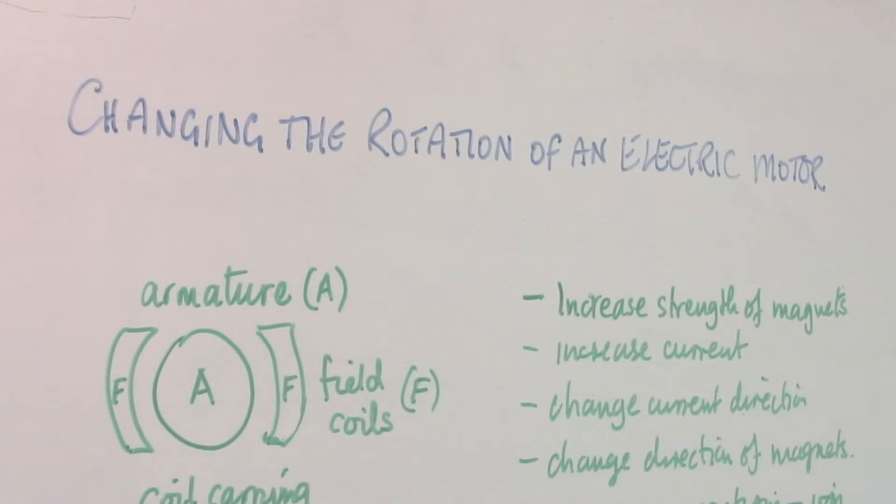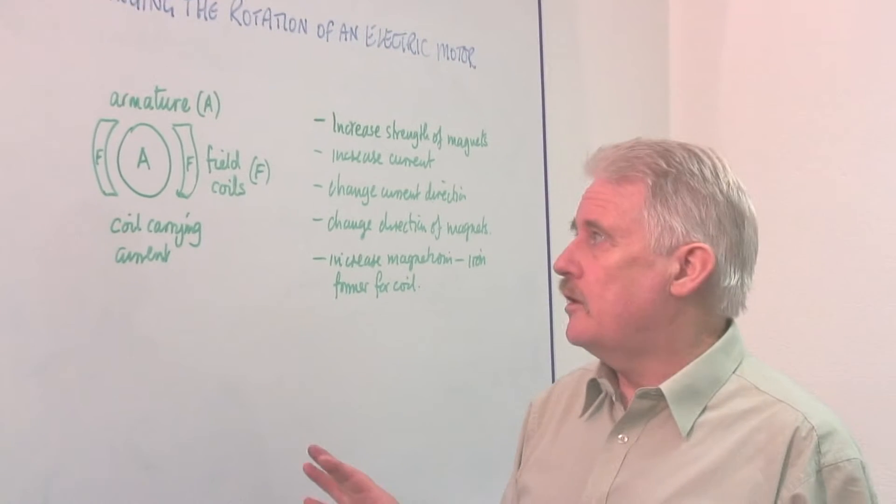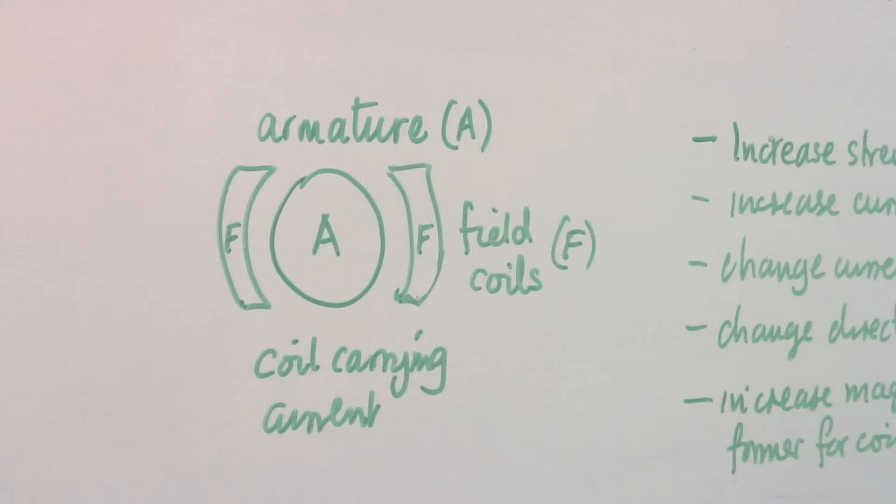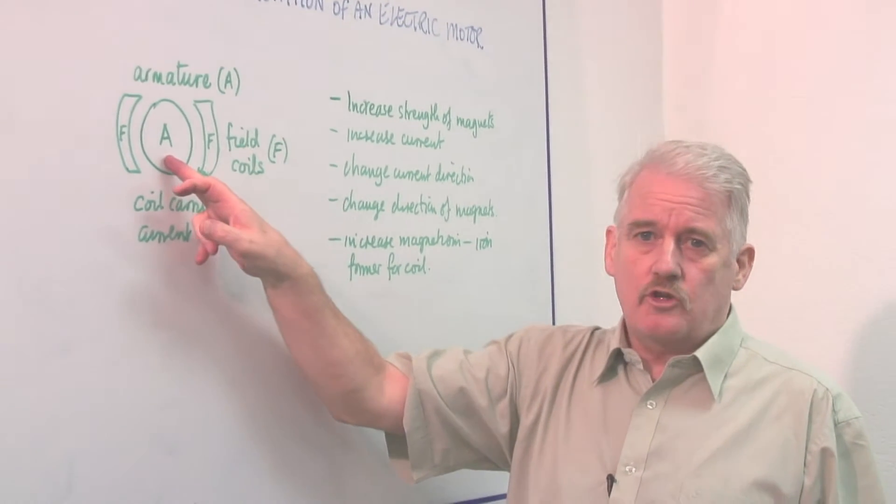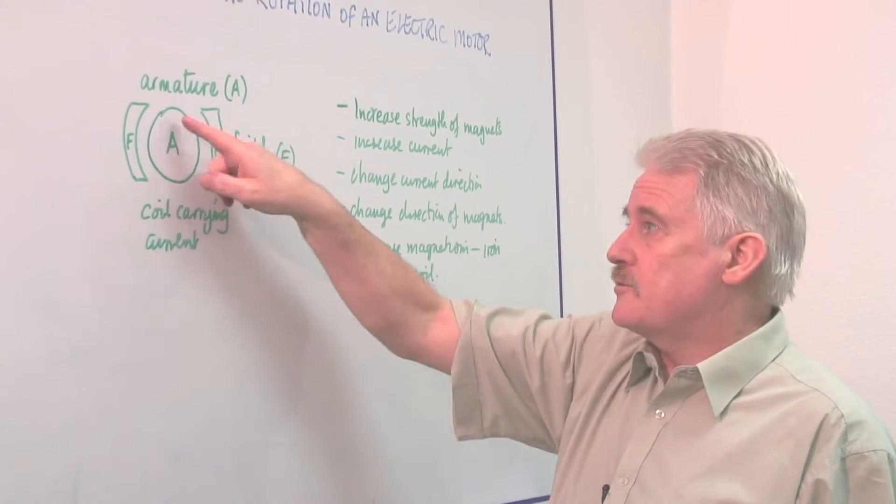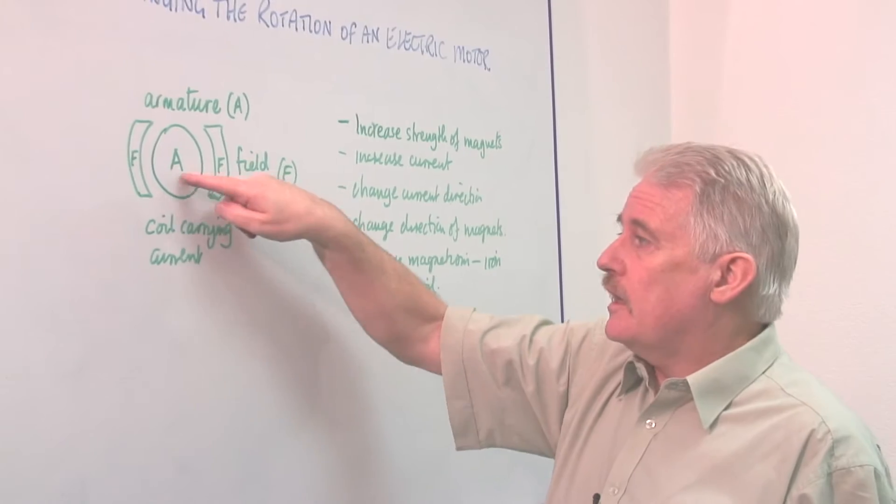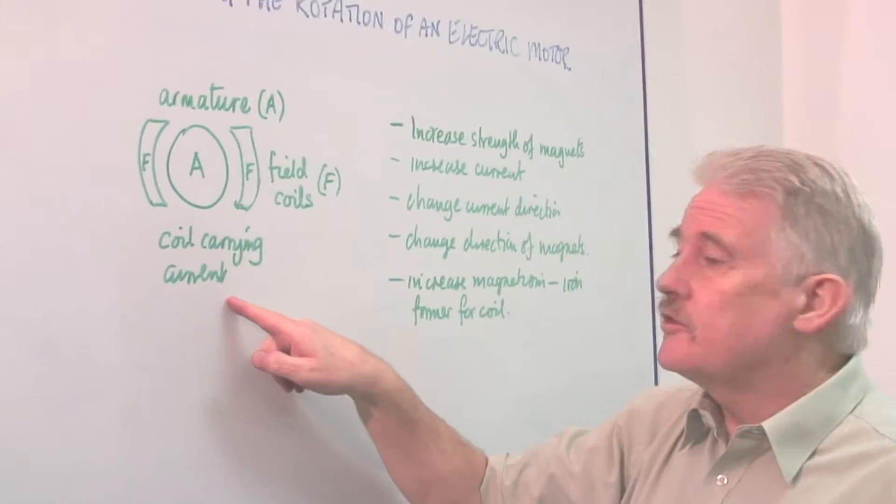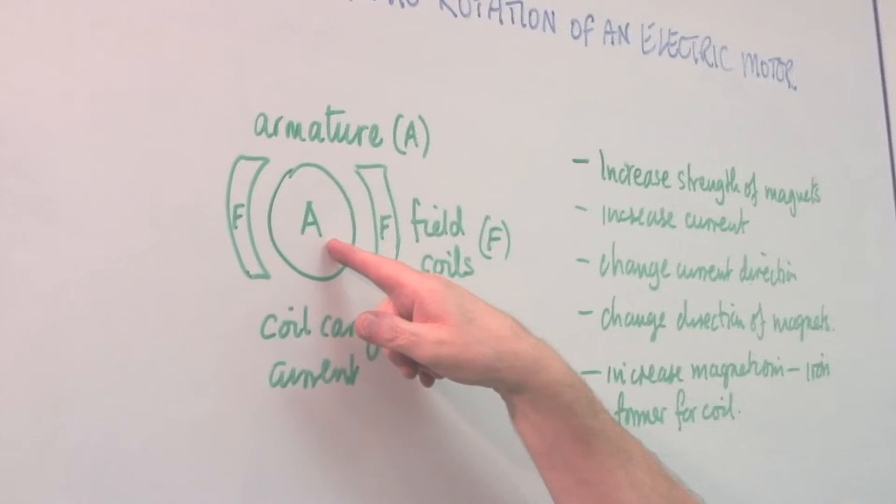An electric motor has basically two major components: the armature and the field coils. The armature is a coil wrapped on some kind of former in which there is a current being carried. There's a current going into there.